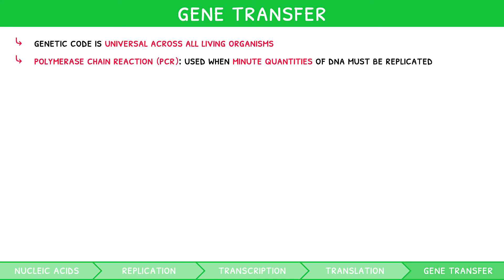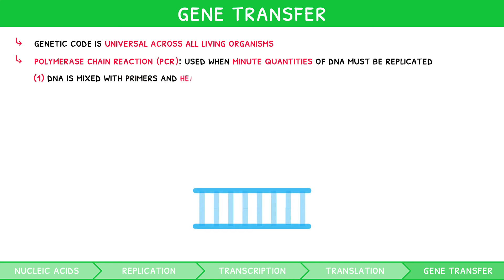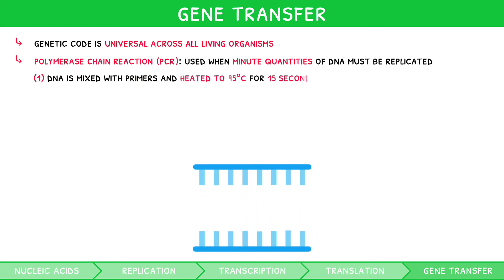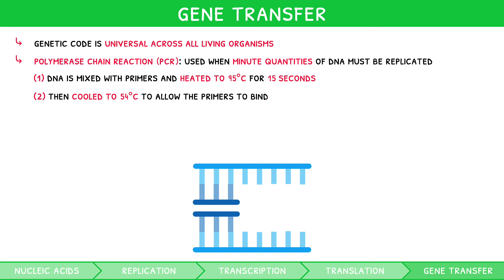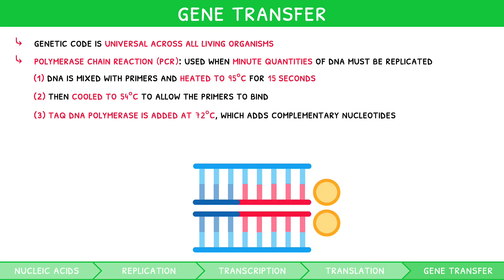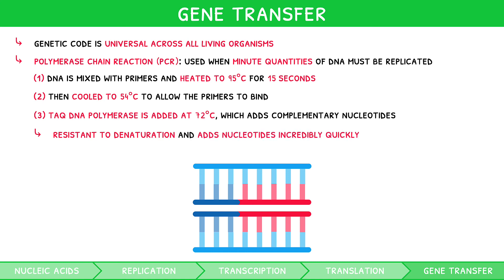During this process, DNA is mixed with primers and heated to 95 degrees Celsius for 15 seconds. The DNA is then cooled to 54 degrees Celsius to allow the primers to bind. Next, TAC DNA polymerase is added at 72 degrees Celsius, which adds complementary nucleotides. These stages can then be repeated for hours to generate millions of copies of DNA, which can then be used in forensic or paternity investigations. The TAC DNA polymerase is used as it is resistant to denaturation and capable of adding nucleotides incredibly quickly, at 1,000 bases per minute.